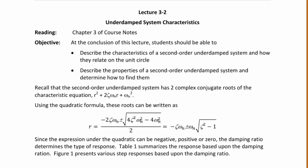So far in this course we have discussed identifying and solving first and second order systems. Today we will talk about underdamped system characteristics. We will describe the characteristics of a second order underdamped system and how they relate on the unit circle, then describe the properties of a second order underdamped system and determine how to find them.